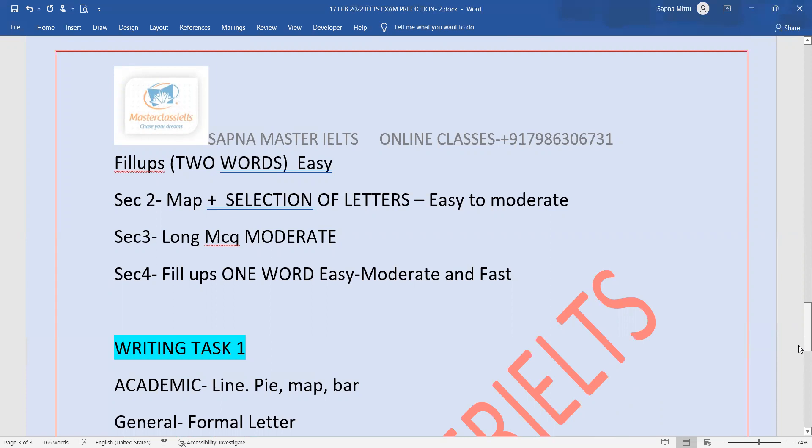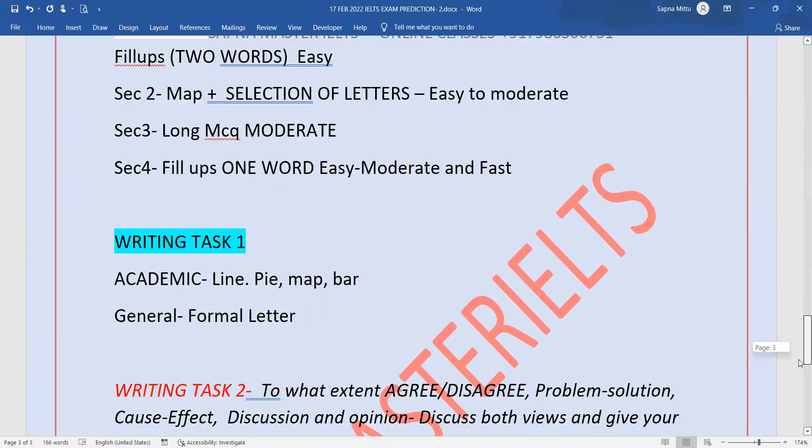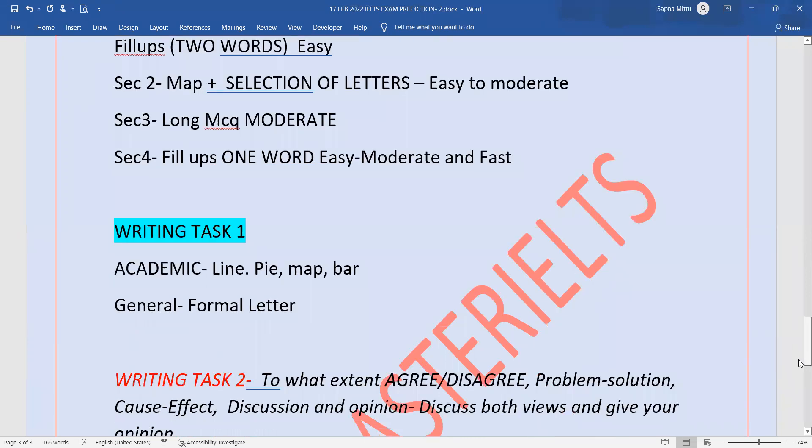For General, a formal letter and complaint is predicted. Task 2 can be 'to what extent', or discuss both views, or problem-solution.